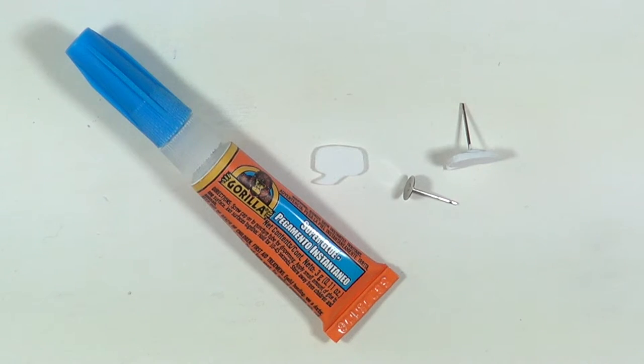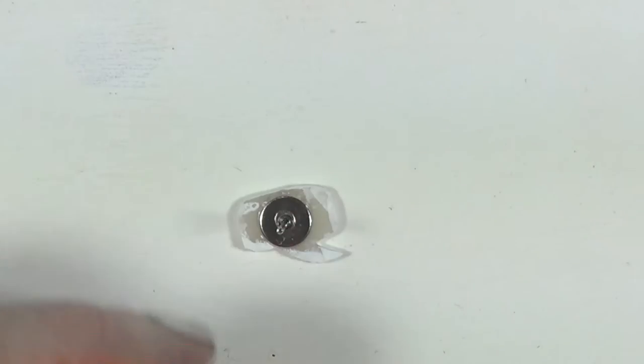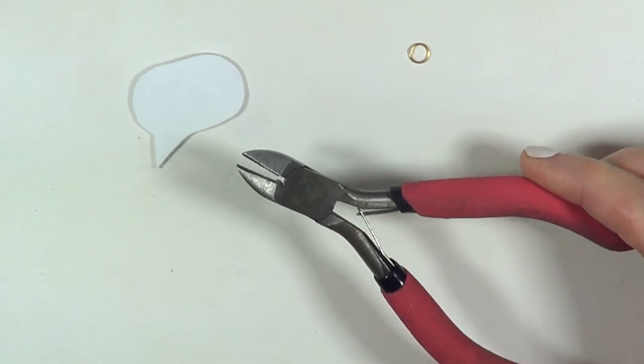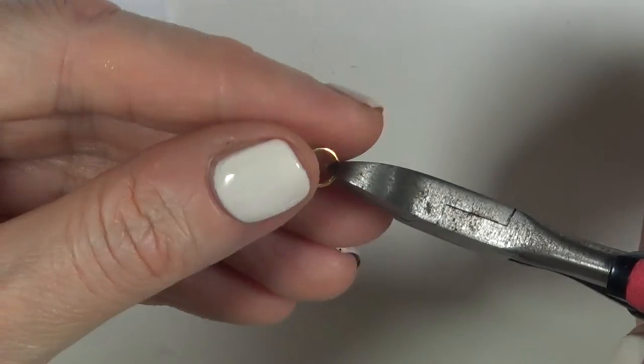So for my tiny speech bubbles, I'm going to be making them into earrings using this earring, and I'm going to attach it with some super glue. For my necklaces though, if you prefer, you can make a hole before your clay dries, or just before you bake it.